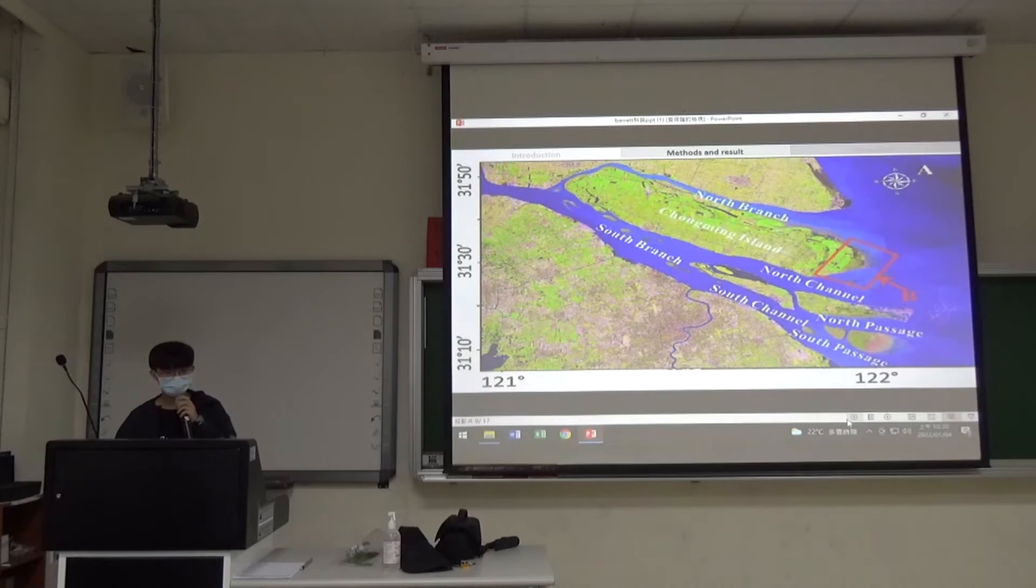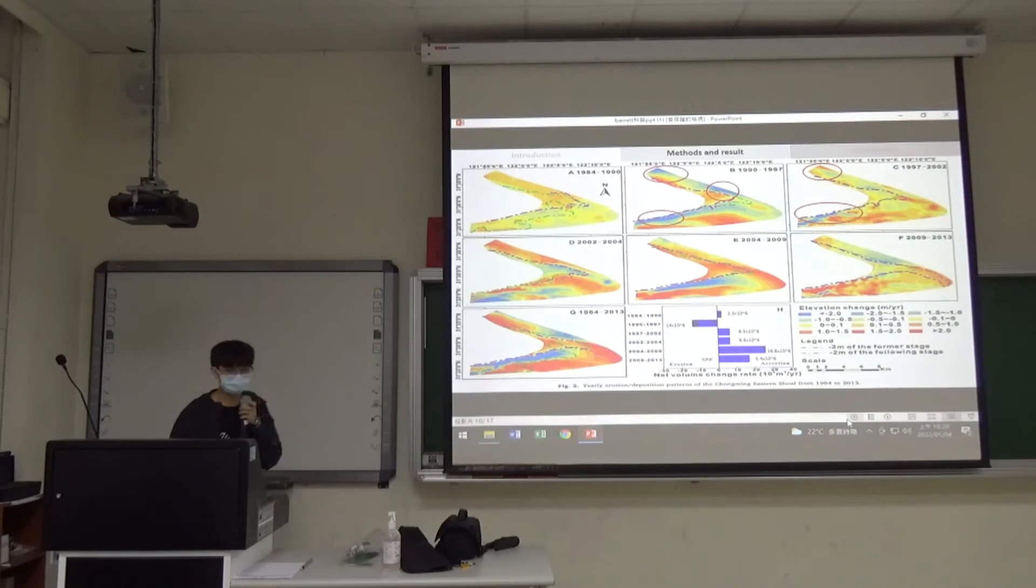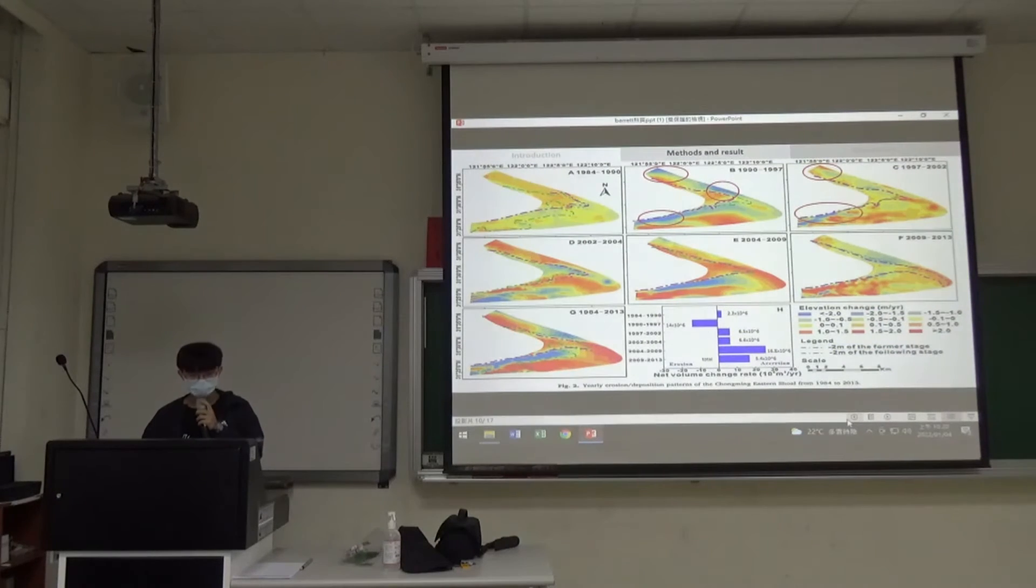Let's go to the results. This picture shows the entire Changjiang Delta, and here is ECS. The color getting blue means the place was getting eroded, and the color getting red means the place was getting depositioned. Pictures A and B show before and after TGD was built. You can see that after TGD was built, most of the place was getting eroded. Let's see picture C compared to picture B. The eroded part became depositioned.